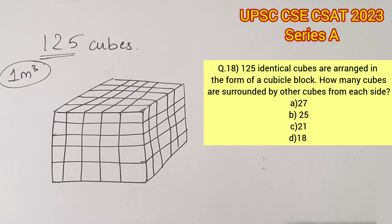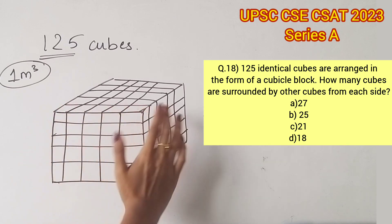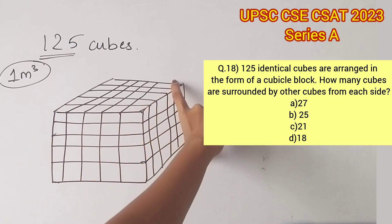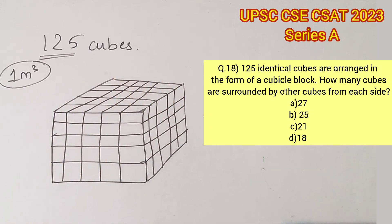We are supposed to find the number of cubes that are completely surrounded by other cubes, which means we will have to eliminate all the surface area that is exposed outside and calculate the remaining ones.